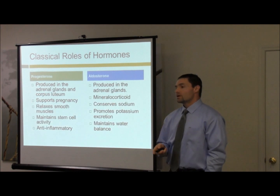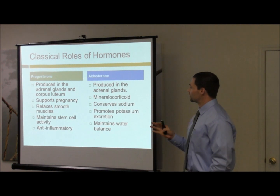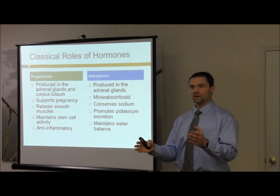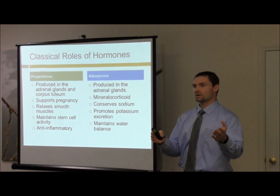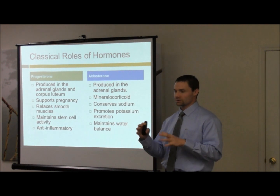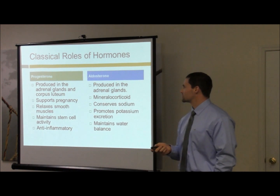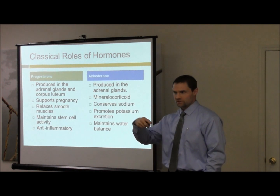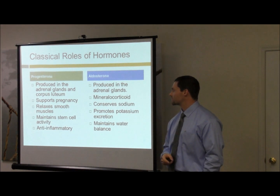This is our last background slide on progesterone. I gave you the dichotomy between estrogen and progesterone — you have to think about both of these, and this is the reason I say all these hormones are very interactive with each other. Progesterone is produced in the adrenal gland, but in cycling females we're also looking at the corpus luteum, and that's the reason you get changes in the menstrual cycle.